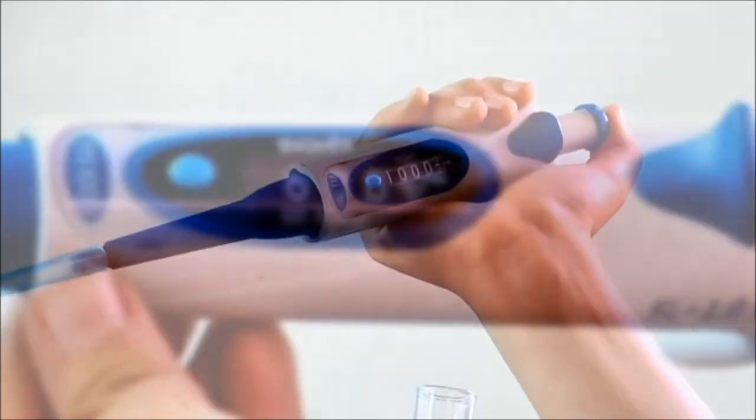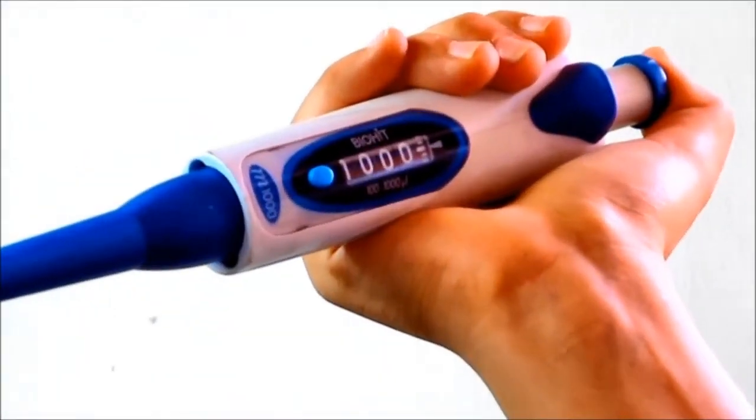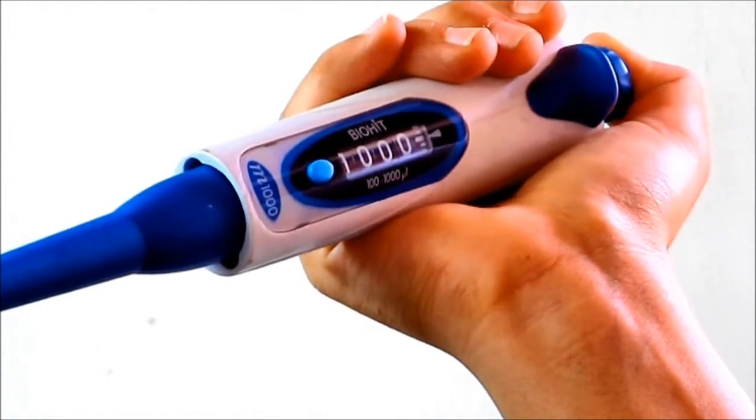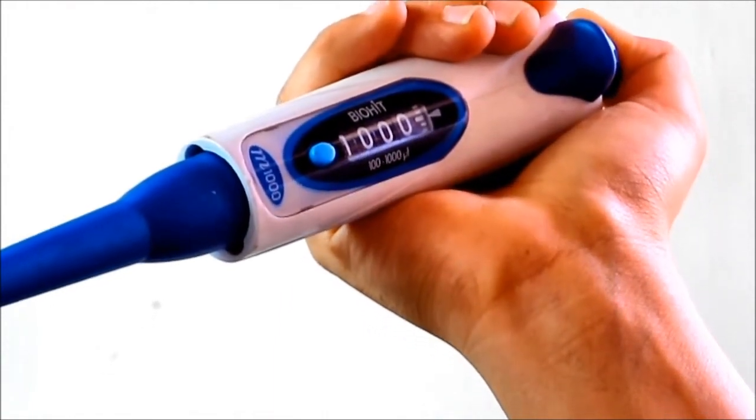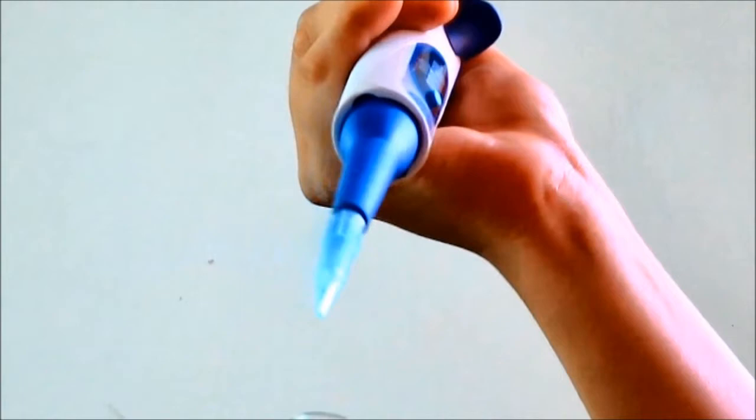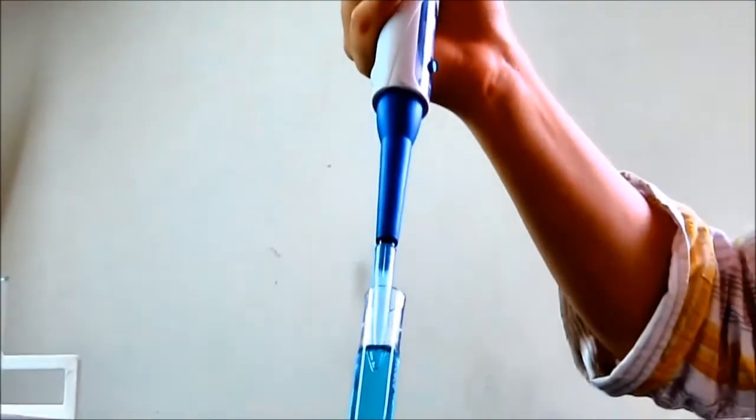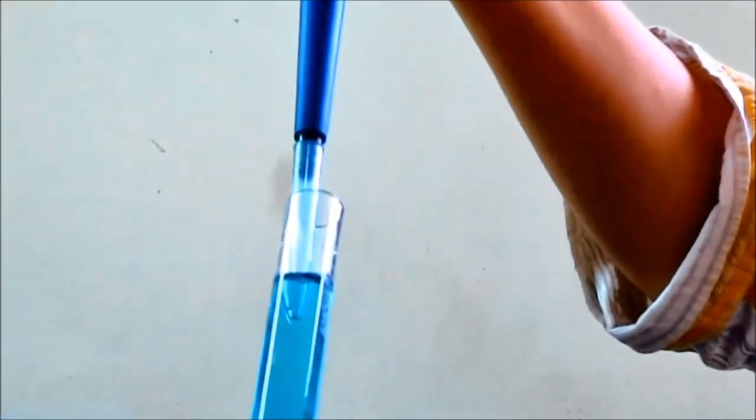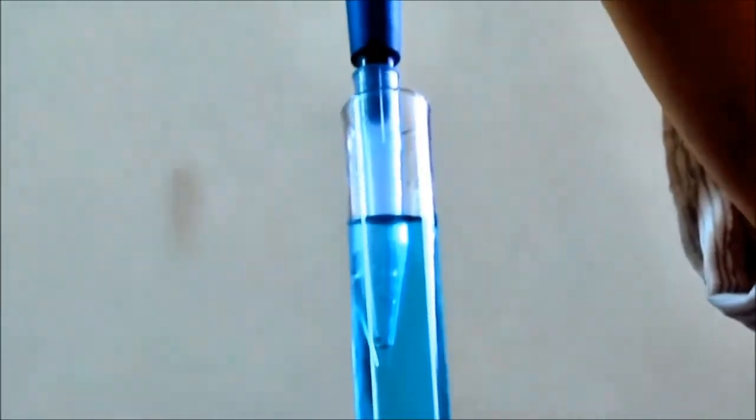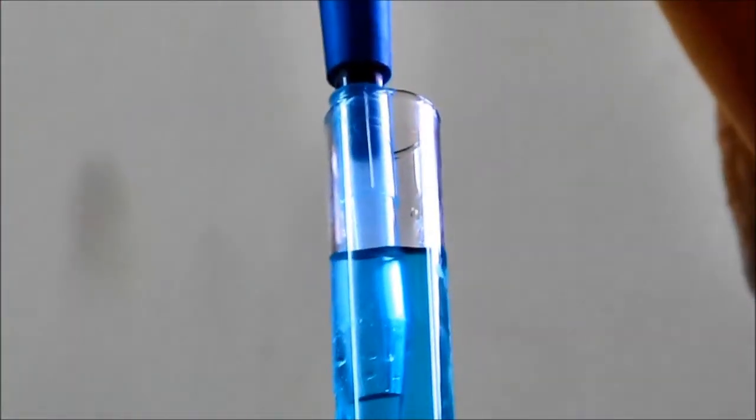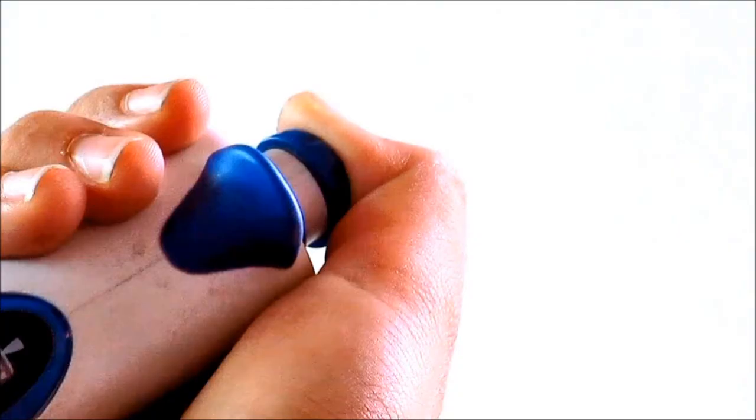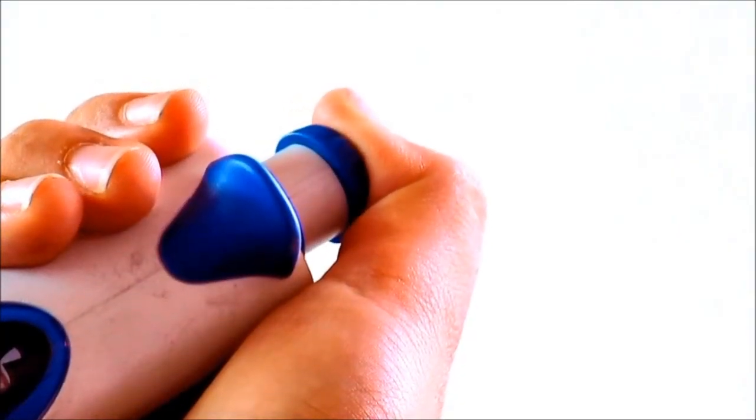The sample is drawn by pressing the volume adjustment knob, then putting the microtip into the sample and while releasing the volume adjustment knob, the sample is drawn into the microtip.